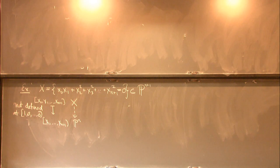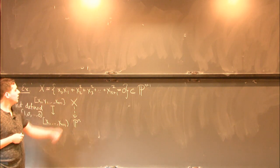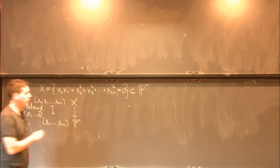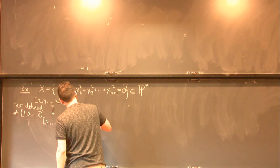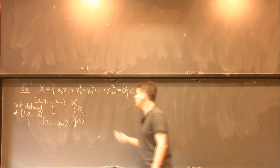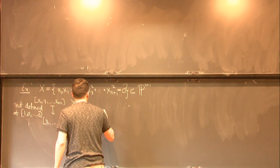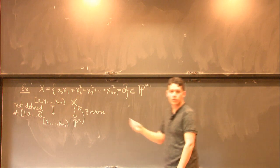And these kind of partially defined maps come up all the time when you try to write down maps given by polynomials between projective varieties. And in this example, something also kind of interesting happens, which is that there's also a rational map going the other direction, which is inverse to this one. So maybe I won't write down the exact formula for this map.